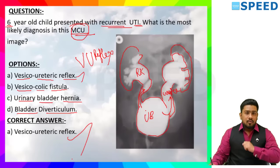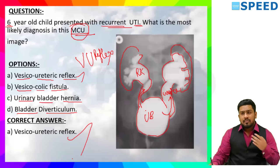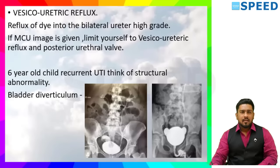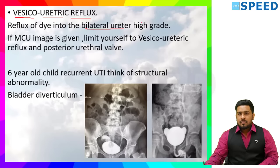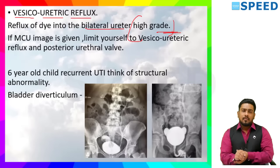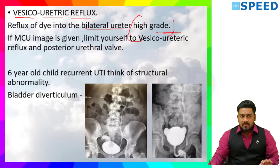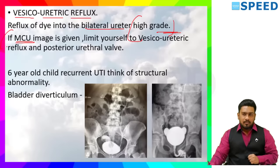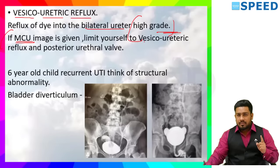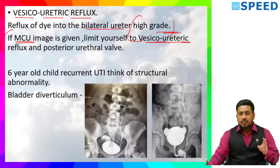Why not vesico-colic fistula, urinary bladder hernia, or bladder diverticulum? This specific case is a high grade of VUR — reflux of dye into the bilateral ureter. Cheat code: whenever a micturating cystourethrogram (MCU) image is given, think about vesico-ureteric reflux and posterior urethral valve. Six-year-old child with recurrent UTI — think of structural abnormalities. These are all the cheat codes.